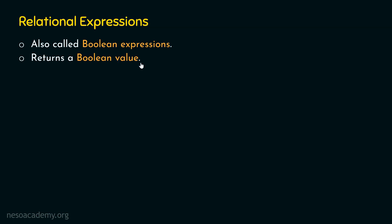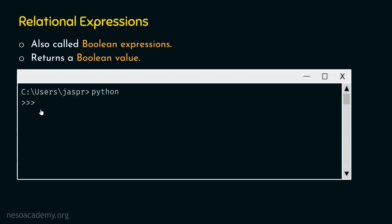It is not mandatory that we always have single-valued operands like 10, 20, or 5. In place of single-valued operands, we can have arithmetic expressions or any other type of expressions. Let's open our command prompt, activate the Python interactive shell, and type: 10 + 13 <= 2 + 3.